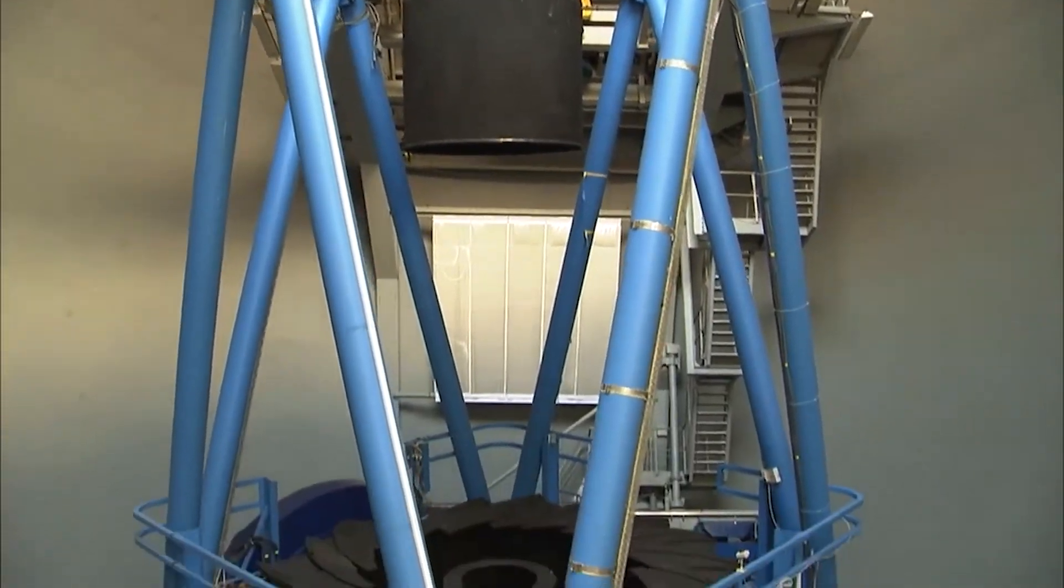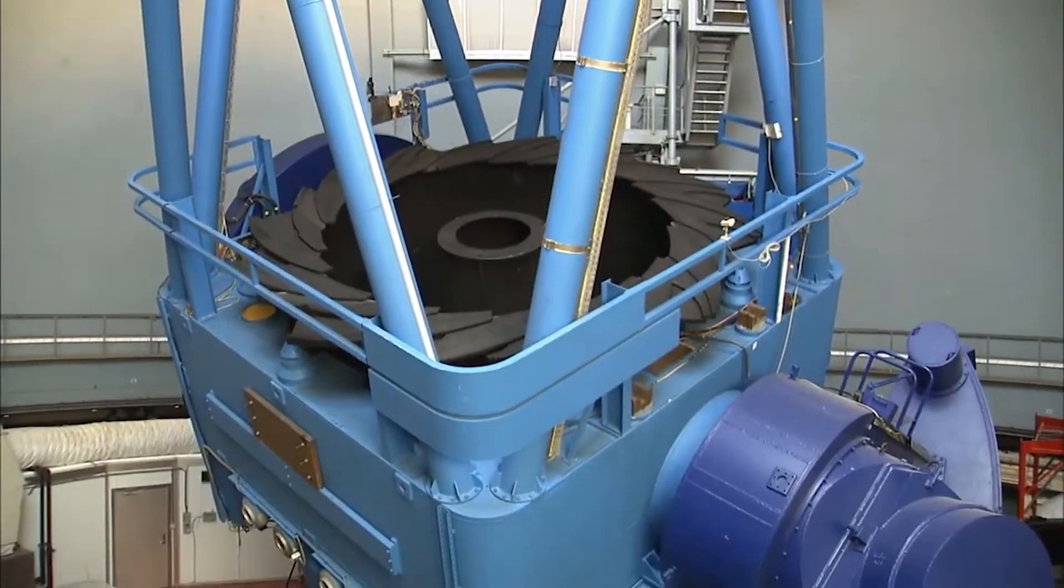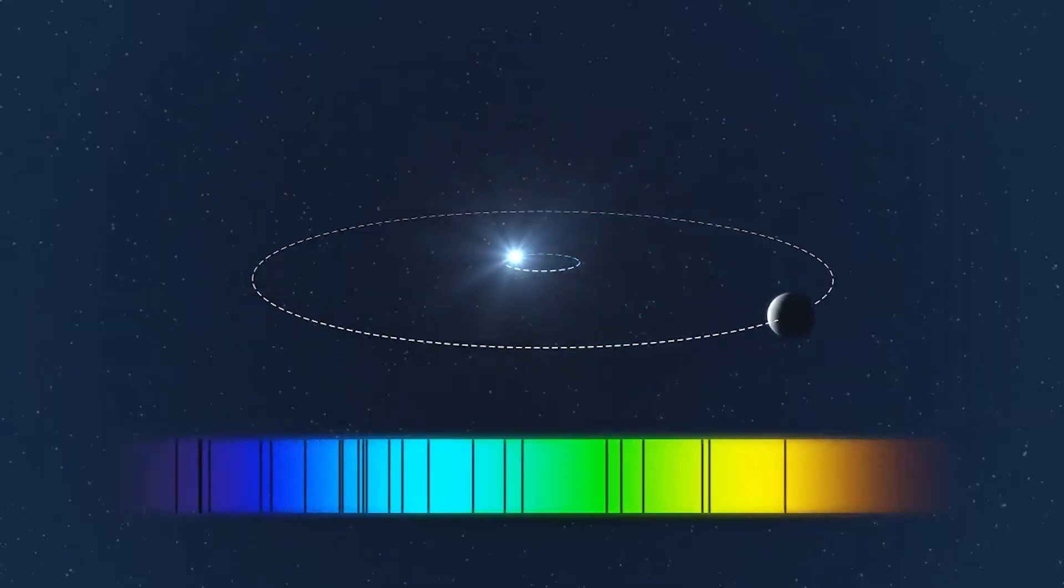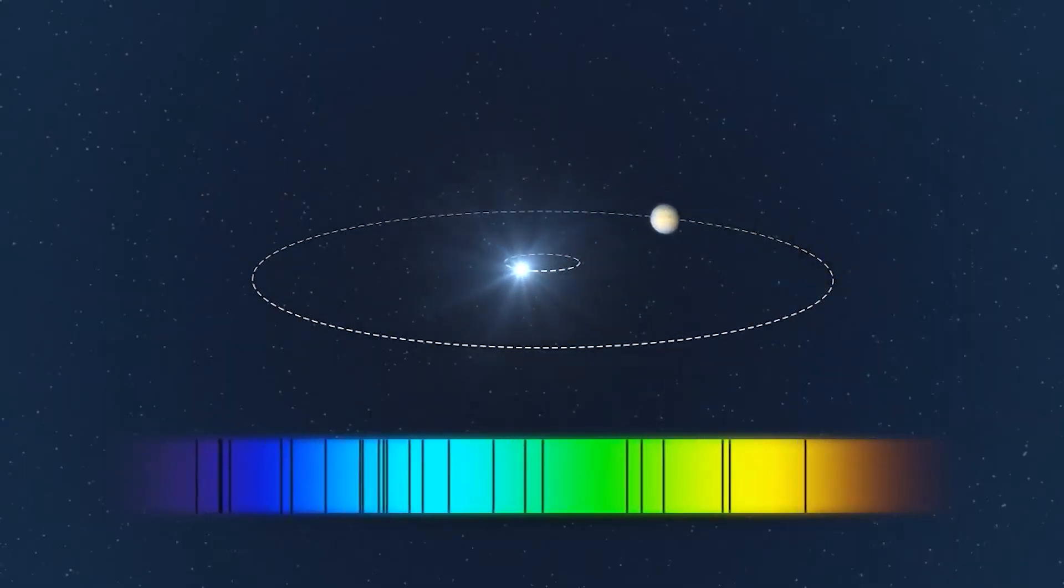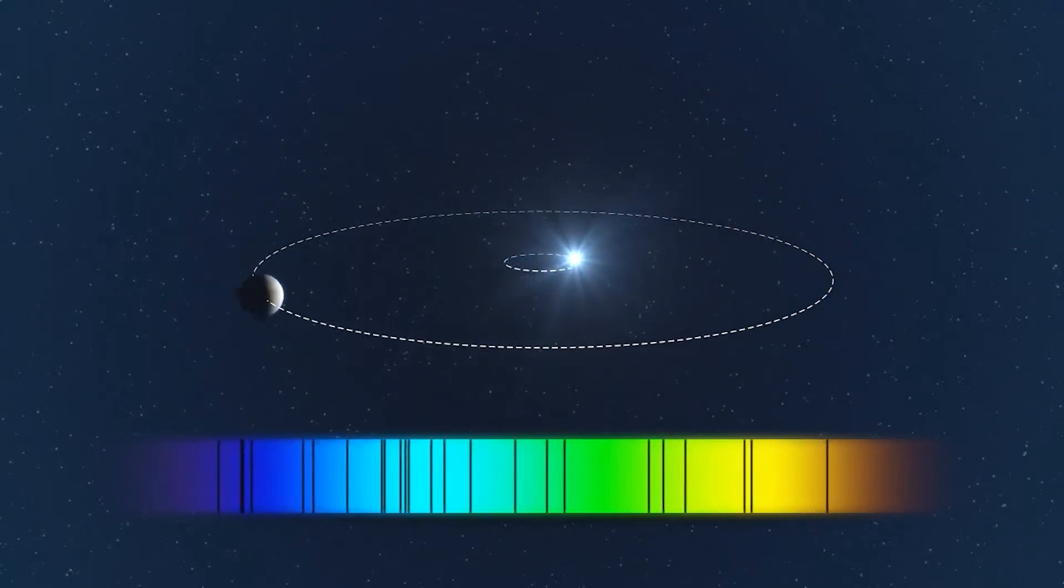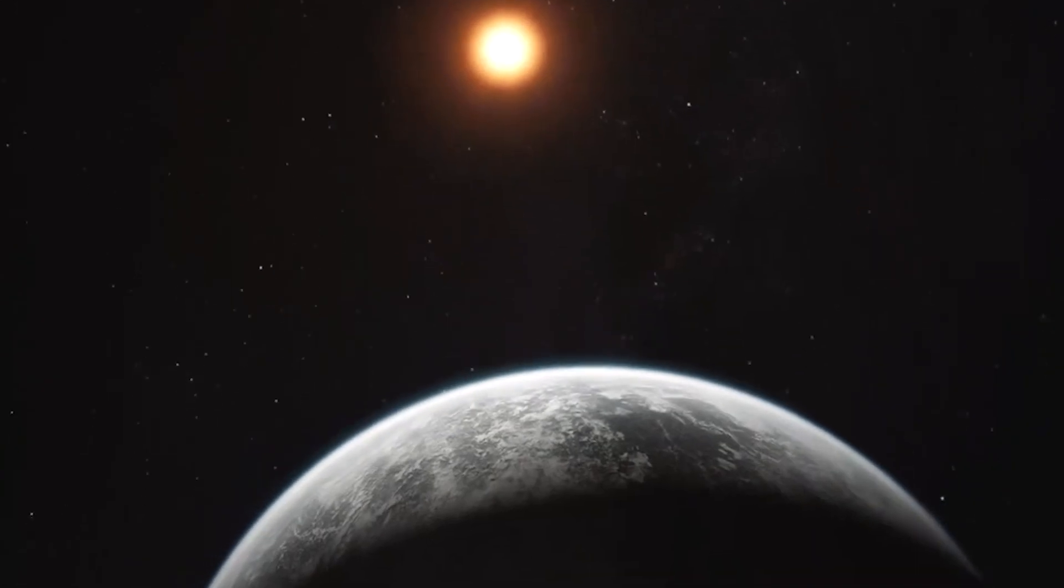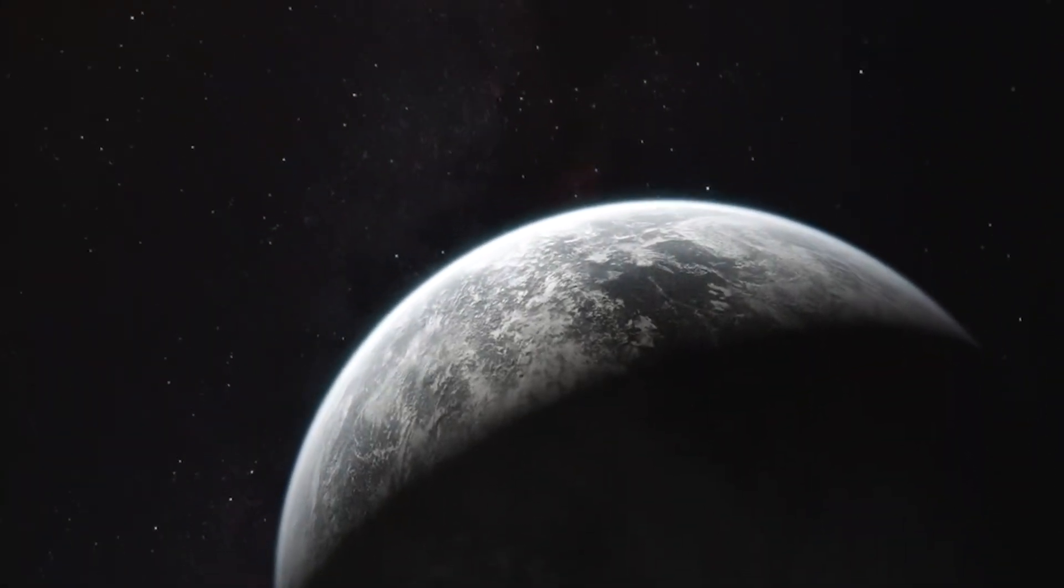After in-depth analysis, its origin was determined to be Proxima b, an exoplanet discovered by astronomers in 2016 using the radial velocity method, which detects variations in a star's position caused by the gravitational pull of orbiting planets.